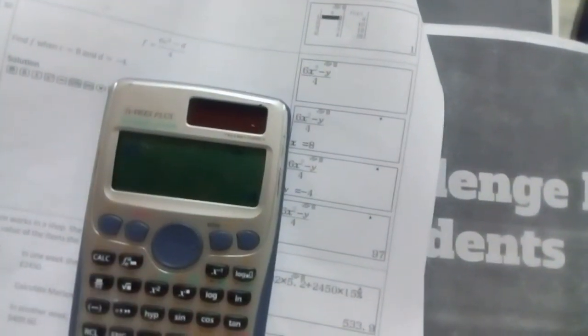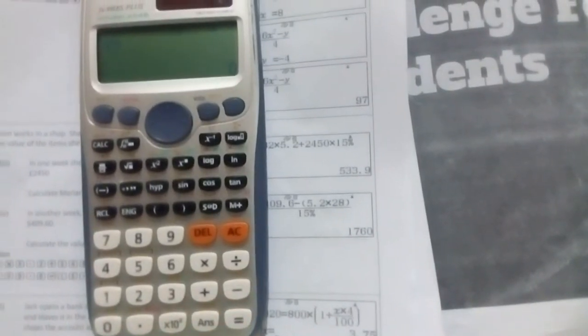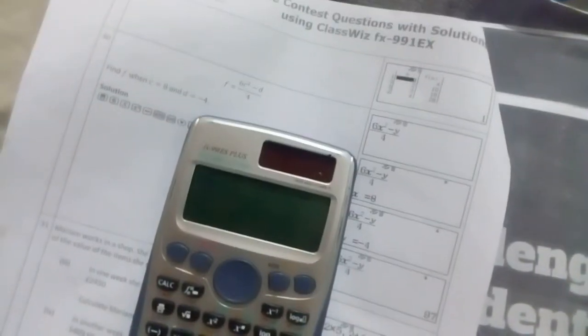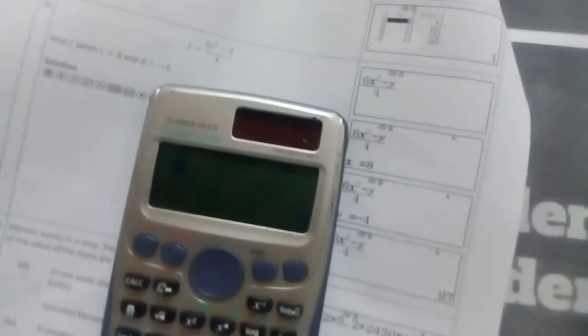Now they're asking us the value of X here, so I will type in 8, then press equal to. And now they're asking you the value of Y, that is D here, that is -4. Type in the value, then press equal to, and you will get something as 97.